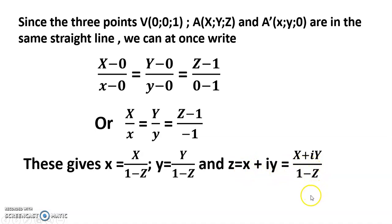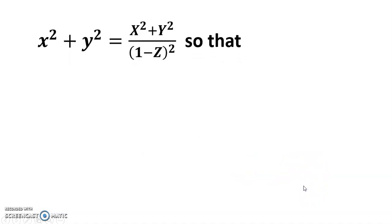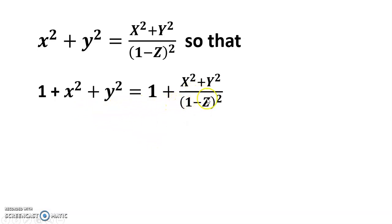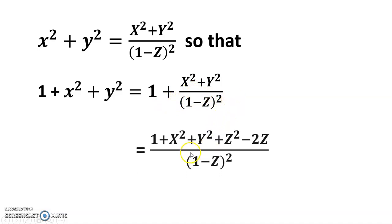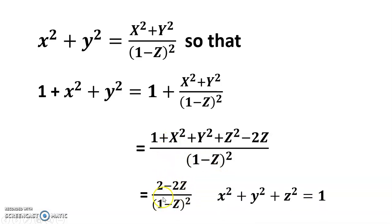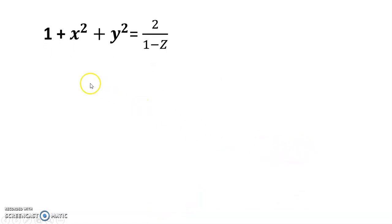From x² + y² = X² + Y², we get 1 + X² + Y² = 1 + x² + y². Since x² + y² + z² = 1, we have x² + y² = 1 − z². So 1 + X² + Y² = 1 + (1 − z²) = 2 − 2z, giving us 1 + X² + Y² = 2/(1−z), and therefore 1 − z = 2/(1 + X² + Y²).